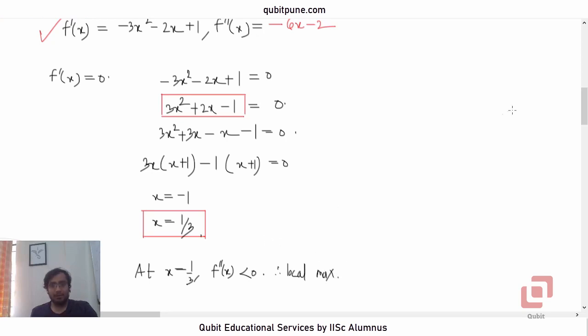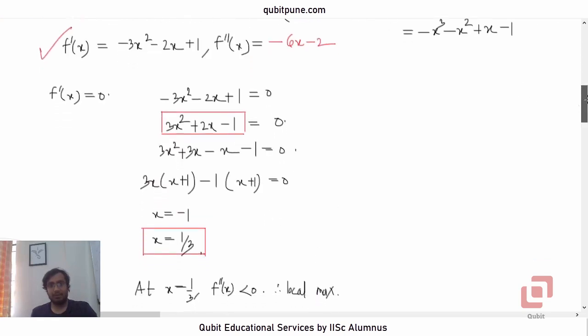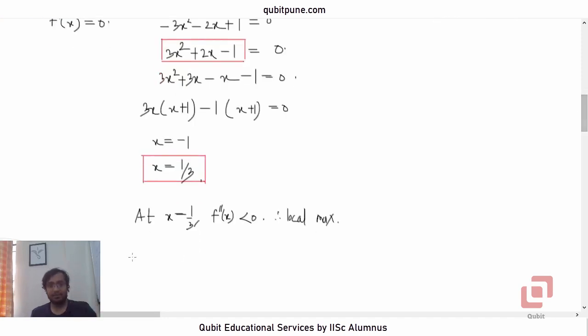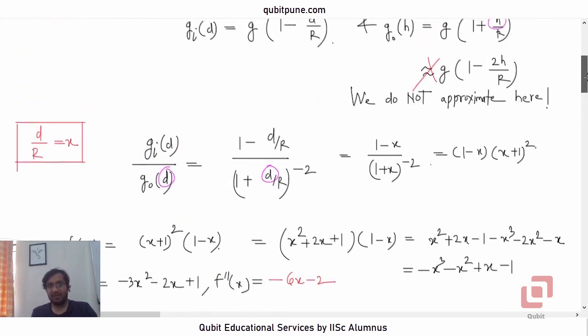And at negative 1, what are we getting? Are we getting a local minimum there? Yes. At negative 1, if you substitute X as negative 1 here, then negative 6 into negative 1, positive 6. 6 minus 2, 4. So at negative 1, second derivative is positive, so local minimum. So that is not right. So X equal to 1 upon 3 is the right option.